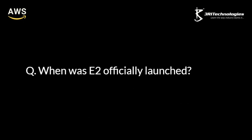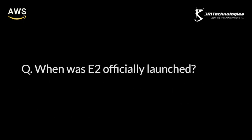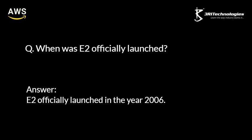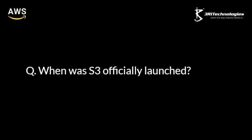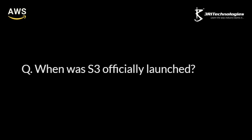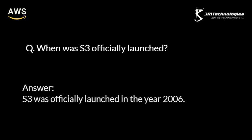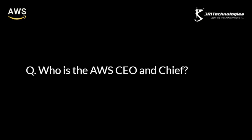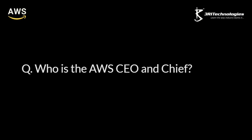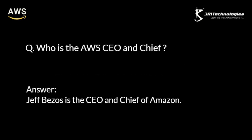When was EC2 officially launched? EC2 was officially launched in the year 2006. When was S3 officially launched? S3 was officially launched in the year 2006. Who is the AWS CEO and Chief? Jeff Bezos is the CEO and Chief of Amazon.